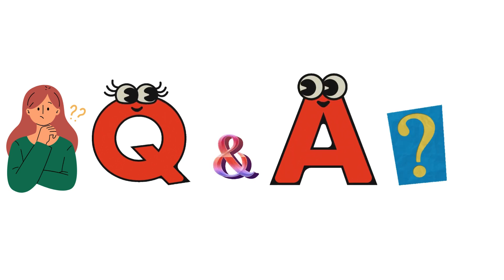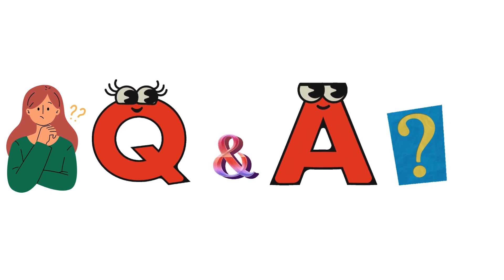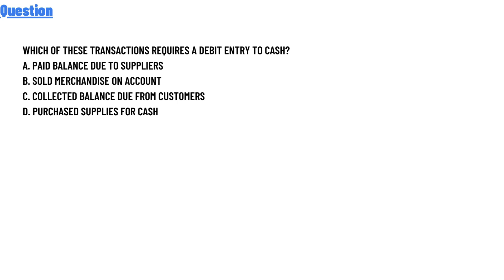Our today's question is: which of the transactions require the debit entry to cash? Option A: paid balance to suppliers. Option B: sold merchandise on account. Option C: collected balance due from customers. Option D: purchase supplies for cash.